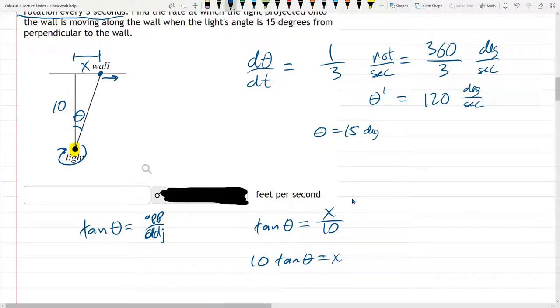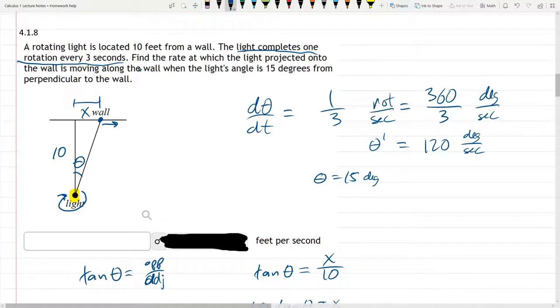If you remember these steps for related rates, basically it's relate your variables in an equation. And then take a derivative. I like to know what I'm trying to find. And so let's look back at the problem. What we're trying to find, find the rate at which the light projected onto the wall is moving along the wall. So we're trying to find how x is changing. Find dx/dt, aka x prime. Alright.